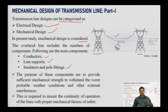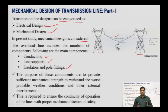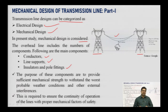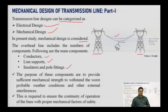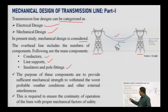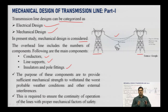If we look at any transmission tower, we can observe that there are three major components. First is the conductor — the medium through which we transfer power. Second is the line support — the tower or pole on which the conductor is mounted, also called the transmission tower. Third is the insulator and pole fitting, which is used to electrically isolate the conductor from the metallic supporting structure.